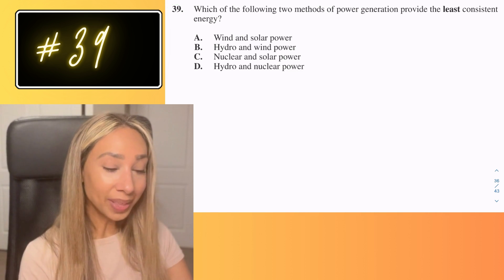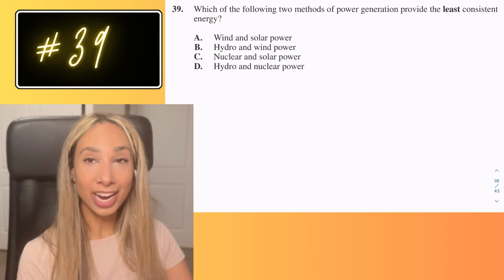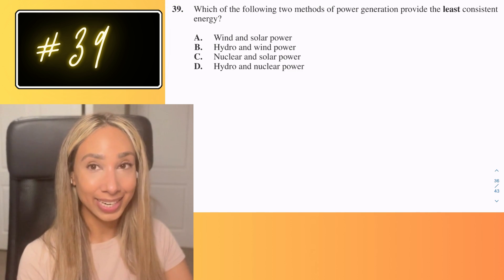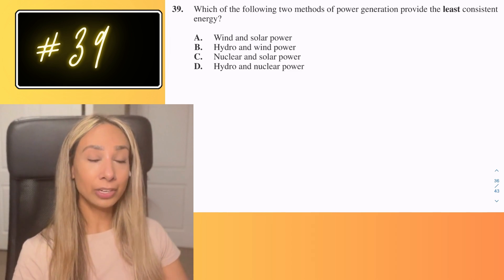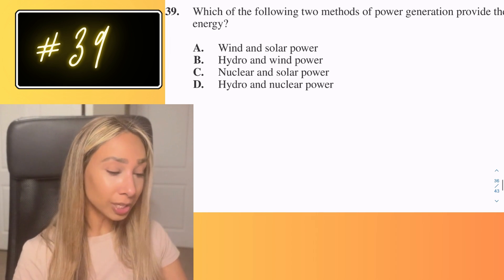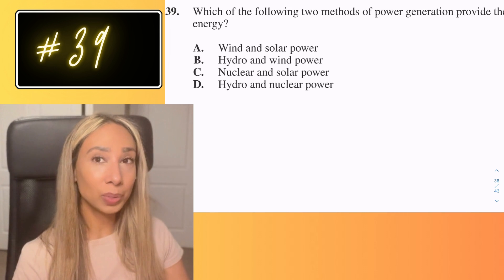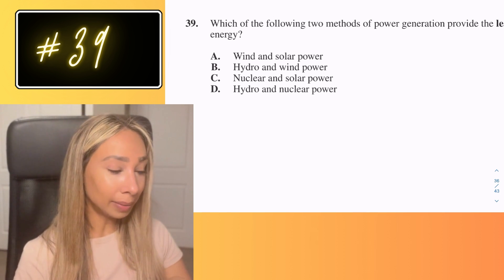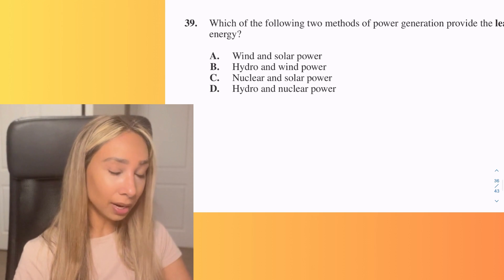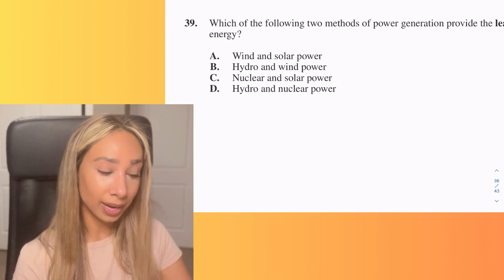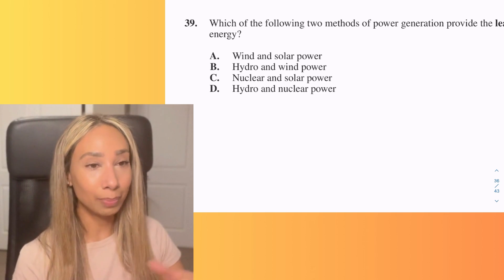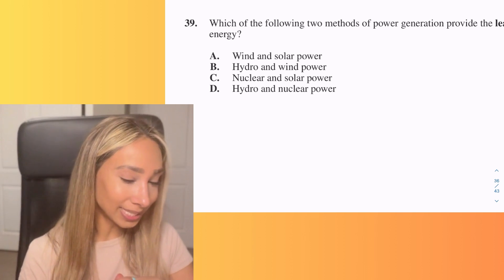Number 39. So with this one, we need to decide which one is actually going to be the least consistent. So that means in terms of the energy that they give us under our options, it's the one that we can't always 100% rely on. I'm also going to make an assumption here that they are talking about it with specific to Alberta weather conditions, because in other places of the world, it might be a little bit more reliable, but that's my assumption.